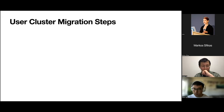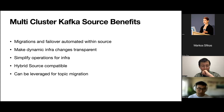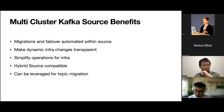What did the user have to do in this migration scenario using the new Kafka source? In fact, they didn't have to do anything — the source took care of everything. The benefits of the multi-cluster Kafka source: migrations and failover are automated within the source; dynamic infrastructure changes are transparent to applications; applications don't need to care about where data comes from and only need to focus on business logic; and this greatly simplifies operations for infrastructure, enabling flexibility to propagate cost-cutting architecture changes to multi-region, multi-tenant distributed systems.